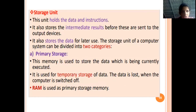Next is the storage unit or memory unit. We use the memory unit to hold data, instructions, intermediate results, and final results. The primary storage unit is temporary storage, meaning it is volatile. Volatile means whenever the power is off, that particular data will be lost.